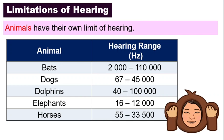Animals like bats, dogs, and dolphins have a much higher frequency hearing range compared to human beings. Here is a table showing the hearing range of a few different animals, which you can also find in your textbook.